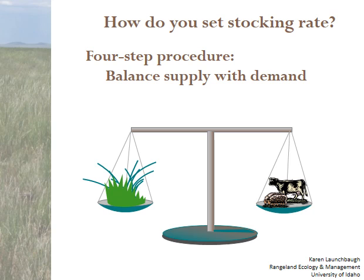That's the general process of using this four-step procedure for balancing forage demand and forage supply. It's just a pencil-on-paper calculation — a ballpark figure — but it's a good place to start.